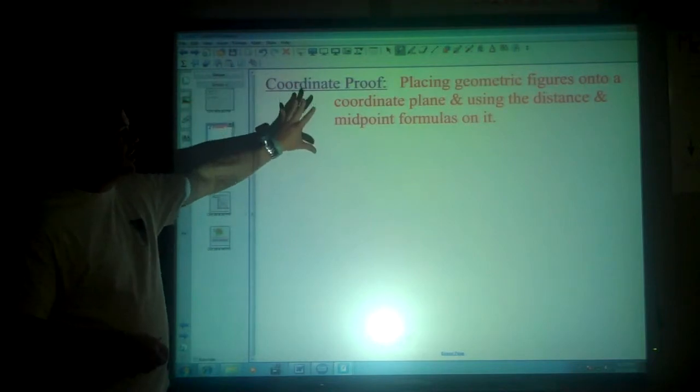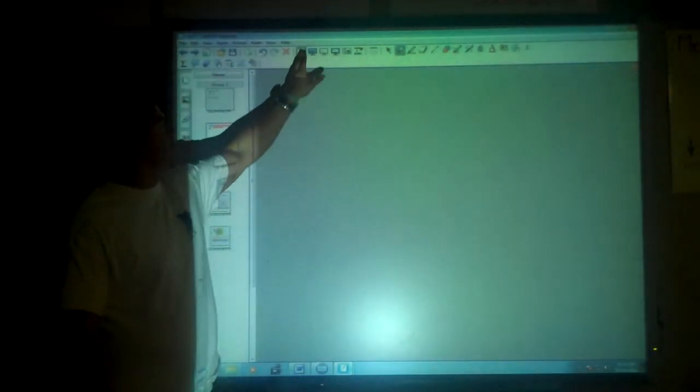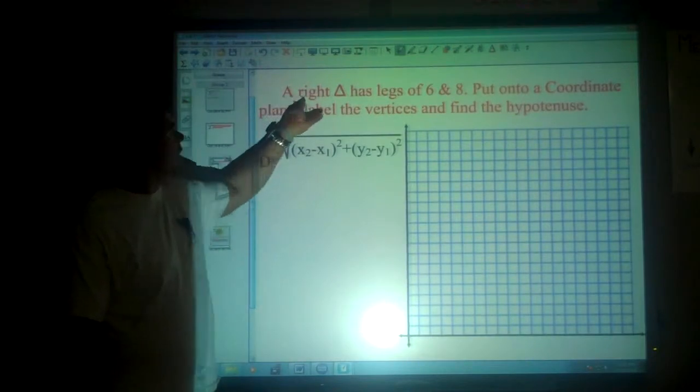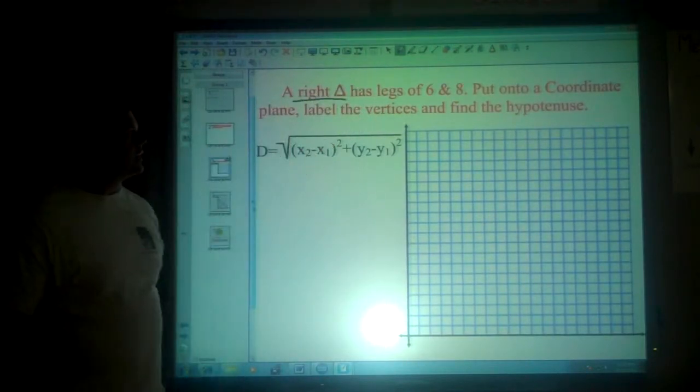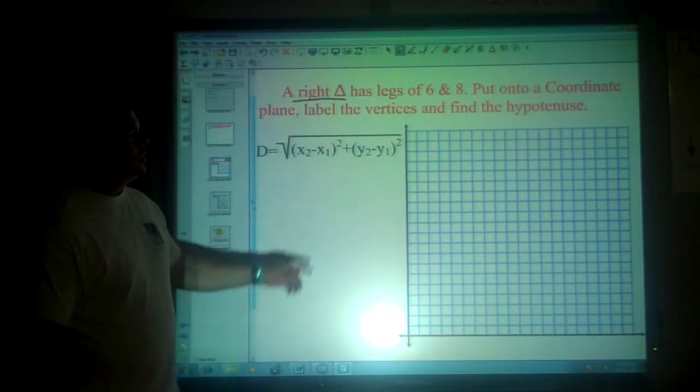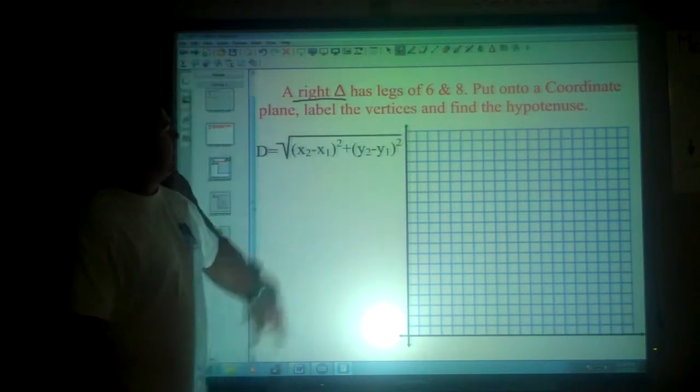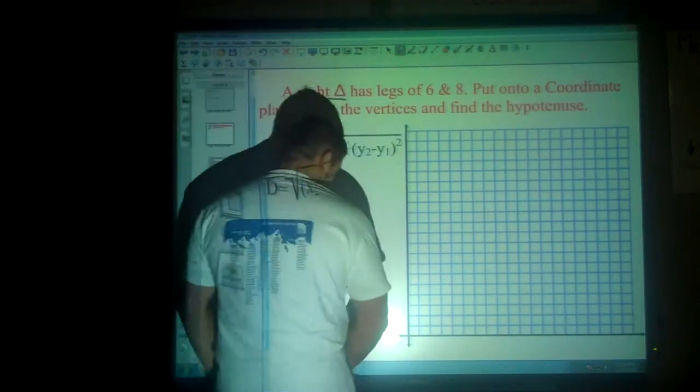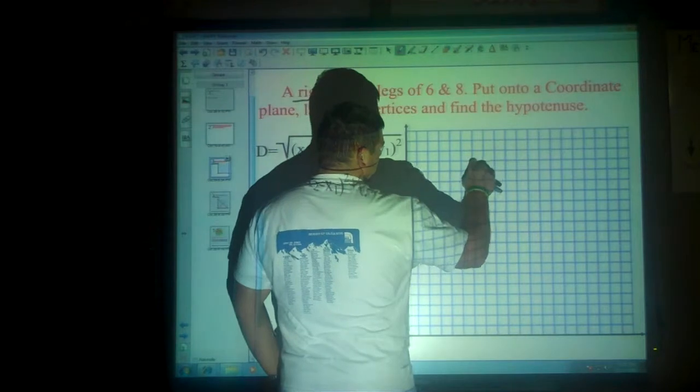So basically dealing with distance for the most part. Our first example, a right triangle has legs of 6 and 8. Put onto a coordinate plane and label the vertices. Now, in order for something to be a right triangle that has legs of 6 and 8...